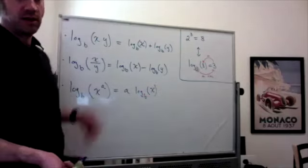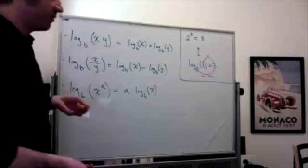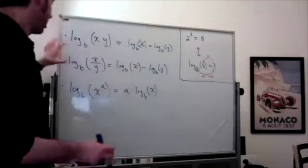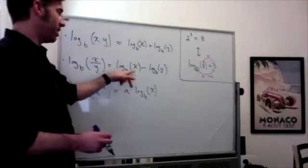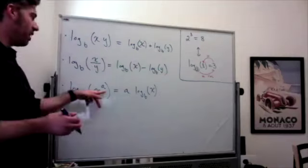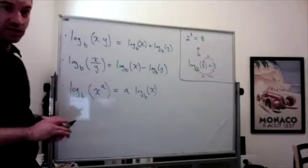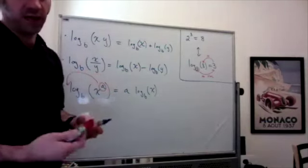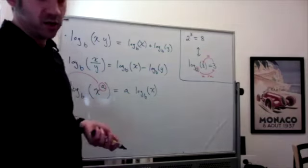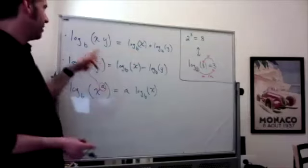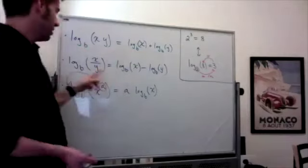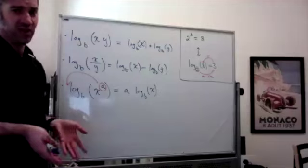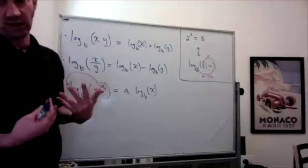In summary: log of a product becomes log of first plus log of second; log of a fraction becomes log of numerator minus log of denominator; log of x to a power means that power comes down in front. These rules only work when all logarithms share the same base — logarithms with different bases don't interact.